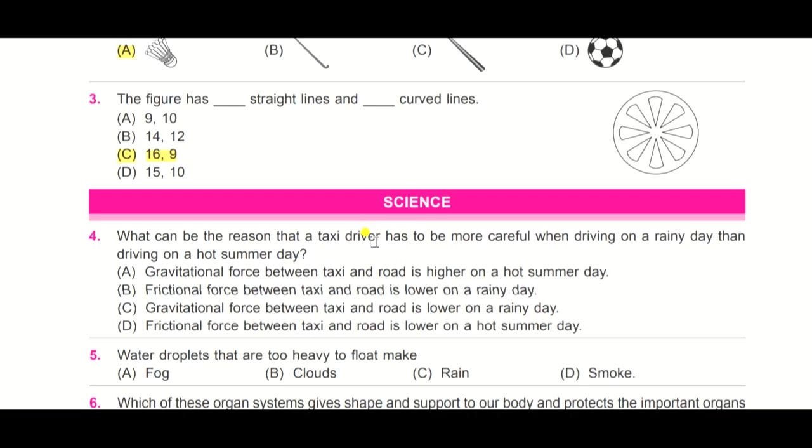Look at the options: option A, gravitational force between taxi and road is higher on a hot summer day. B, frictional force between taxi and road is lower on a rainy day. C, gravitational force between taxi and road is lower on a rainy day. And D, frictional force between taxi and road is lower on a hot summer day.